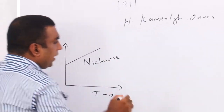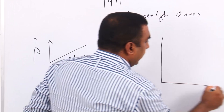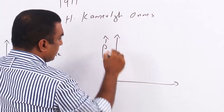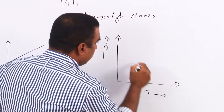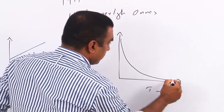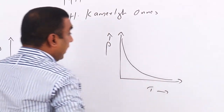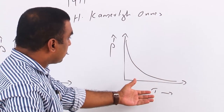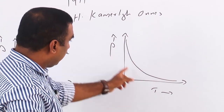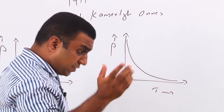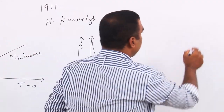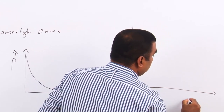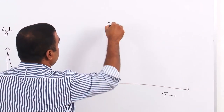But if we take the case of semiconductors, the variation of resistivity with temperature is like this: as temperature increases, resistance or resistivity decreases in an exponential way.